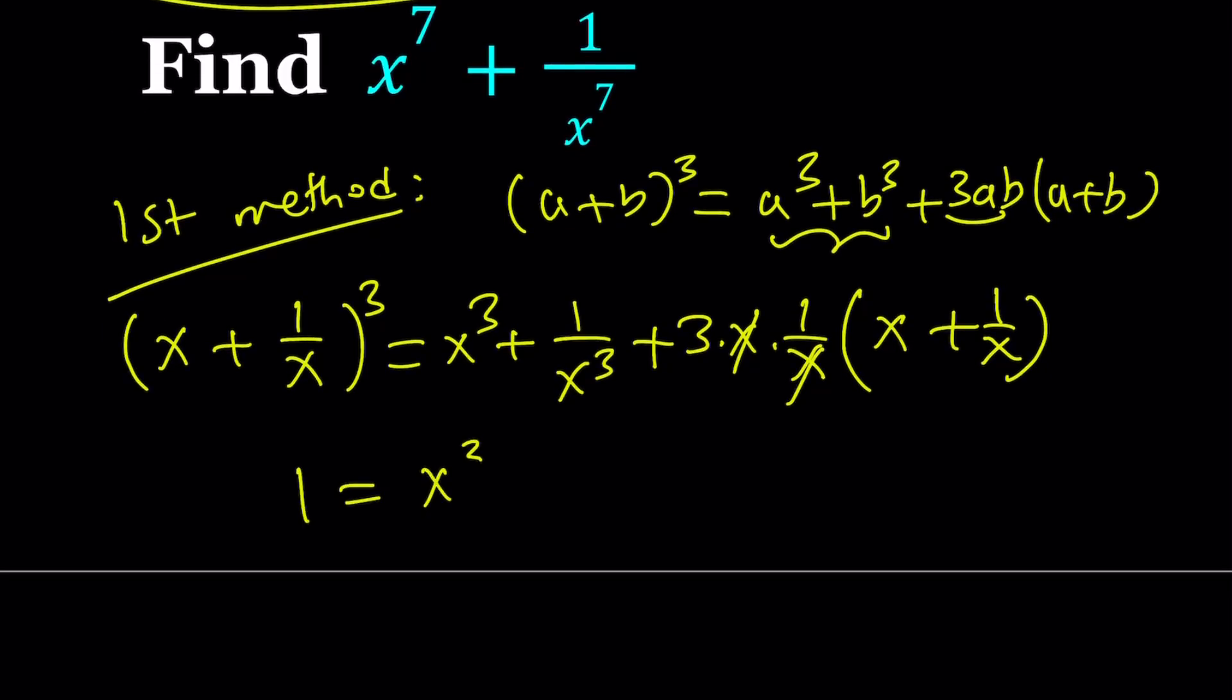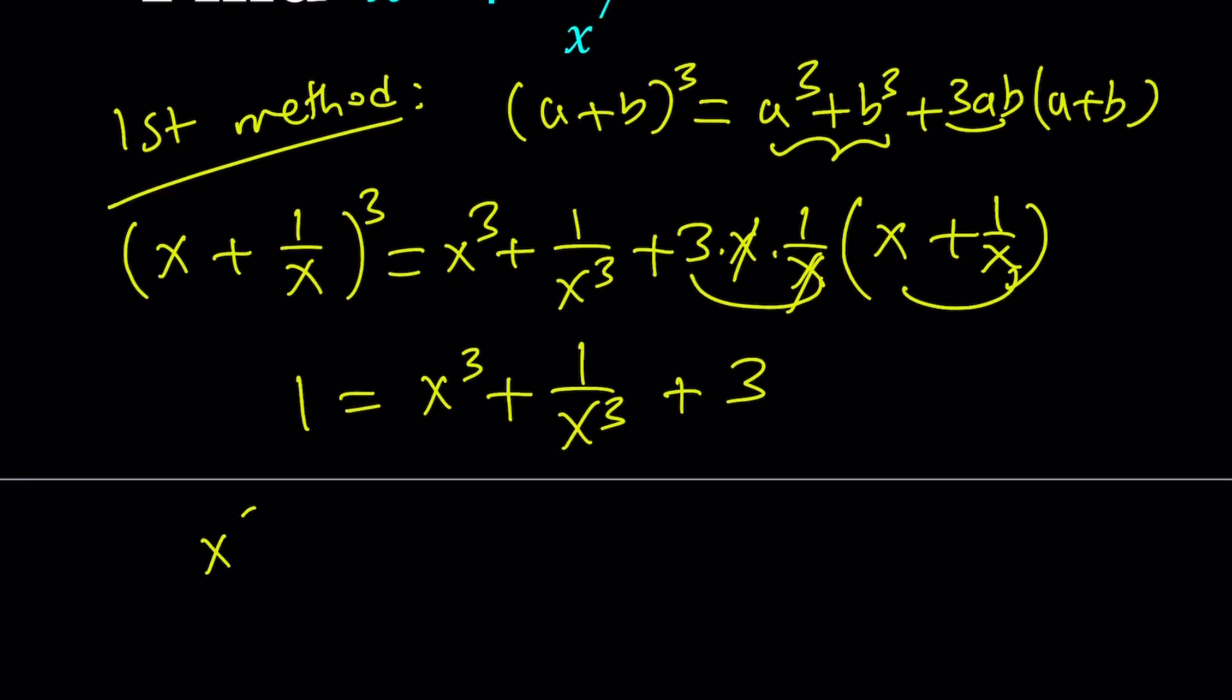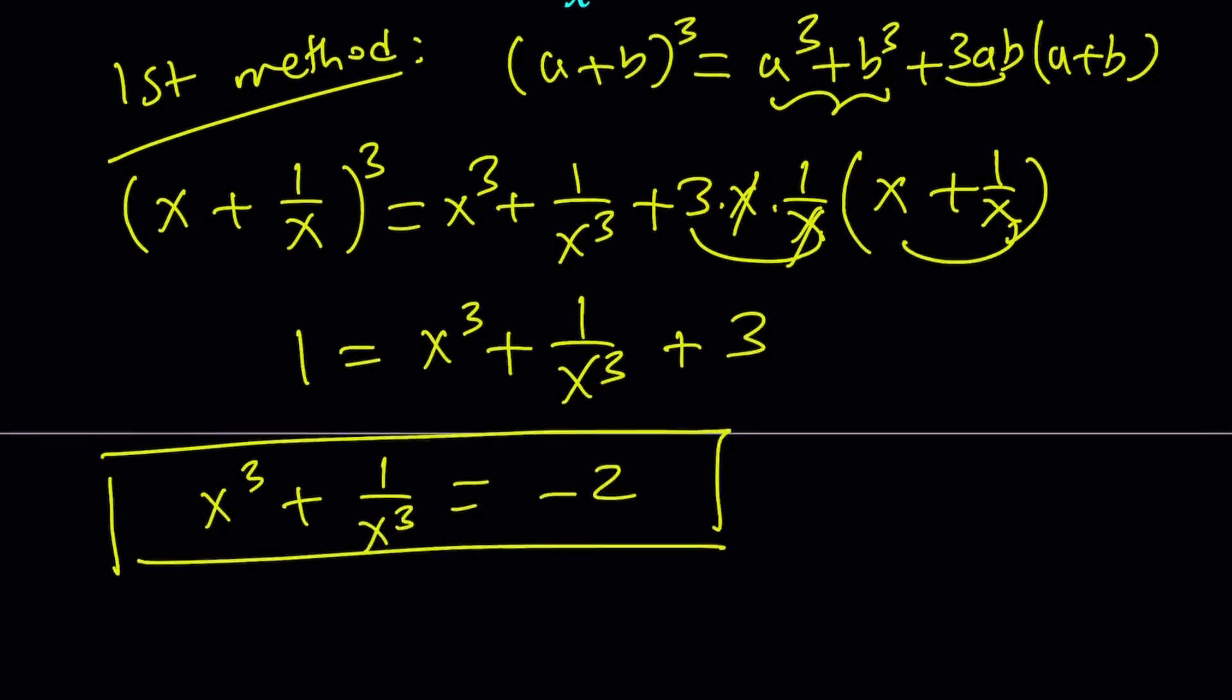My goal is to find x^3 + 1/x^3 from here. And I end up with 3 times 1, which is 3. So from here, we get the following: x^3 + 1/x^3 is equal to -2. That's the first thing I would need to use. Let's keep it at that.